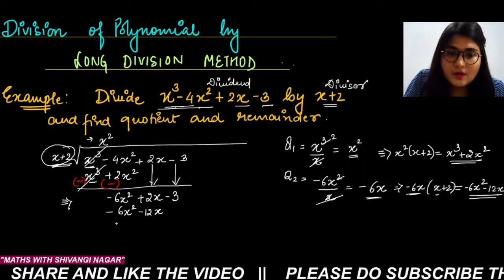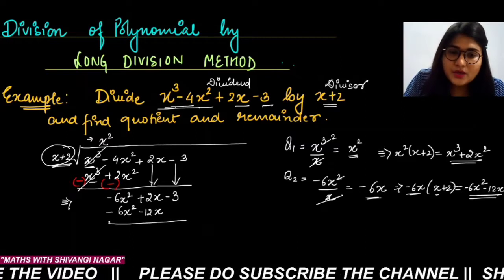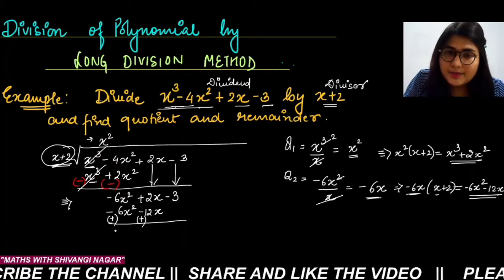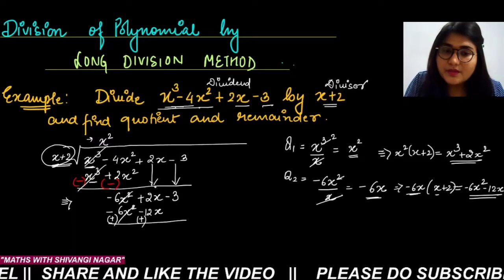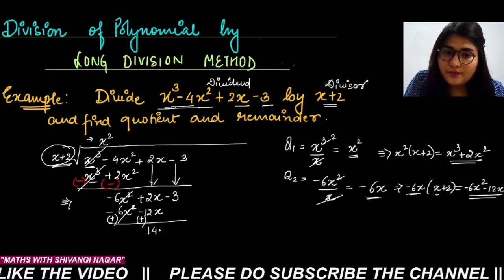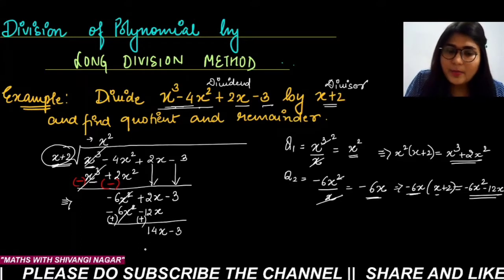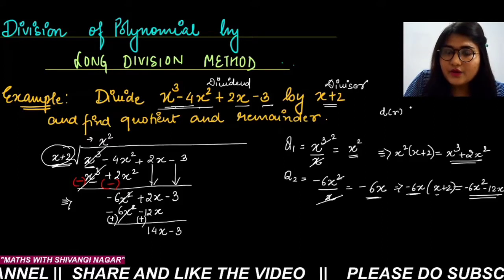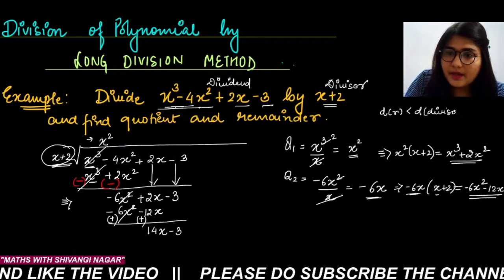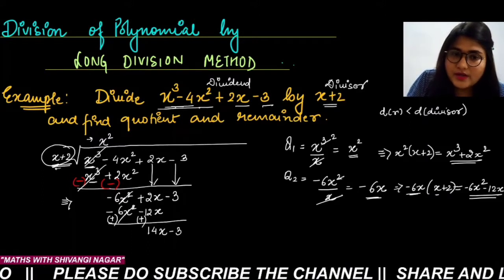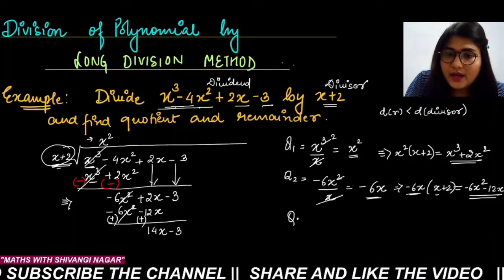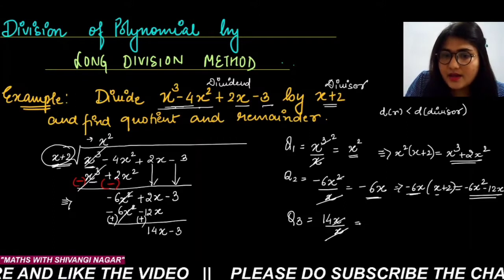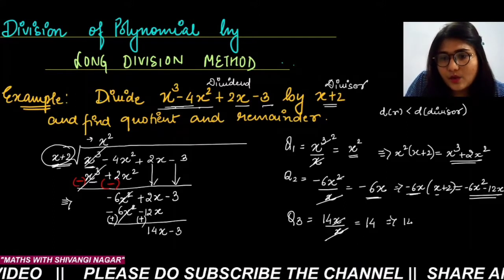Now sign change: minus 6x² becomes positive 6x², and minus 12x becomes positive 12x. So minus 6x² and plus 6x² cancel out. Plus 2x and plus 12x makes 14x. And we bring down minus 3. So we now have 14x minus 3. The degree of remainder equals the degree of the divisor, so we can still divide. Divide 14x by x, which gives 14 — the third term of the quotient.